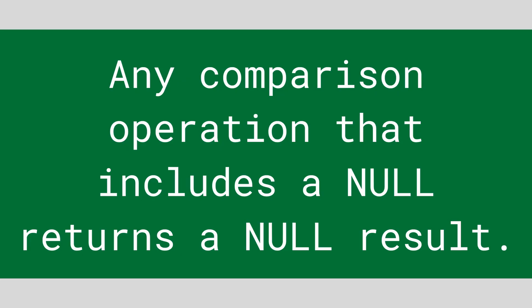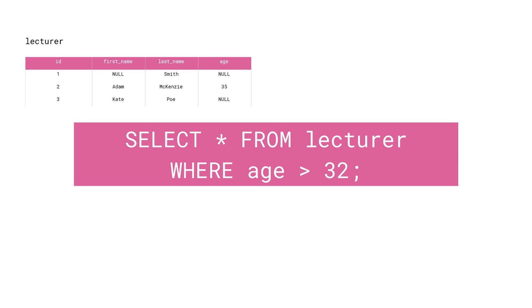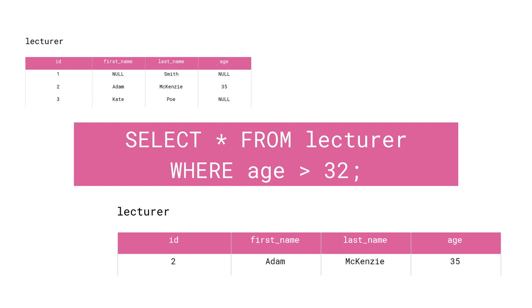There is also one more very important thing you should know about Nulls. Any comparison operation that includes a Null results in a Null. For example, we've got our Lecturer table and we'd like to show only those Lecturers that are over 32 years old, so we write: SELECT * FROM Lecturer WHERE age > 32. If we run the query, we only get a single row, because in the other two rows we had a Null in the age column. The database doesn't know what the age is for these people, so when you compare the age of 32 to an unknown age, you get a Null answer, and such rows are never shown.